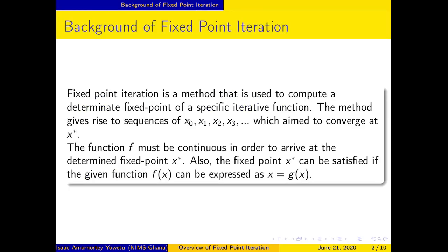Fixed point iteration is a method used to compute a determined fixed point of a specific iterative function. The method gives rise to a set of sequences starting from x₀ until we get a convergent value, which is the approximate value x*. The function under consideration must be continuous in order to give rise to a determined fixed point. The fixed point x* can be satisfied if the given function f(x) can be expressed in the appropriate form.